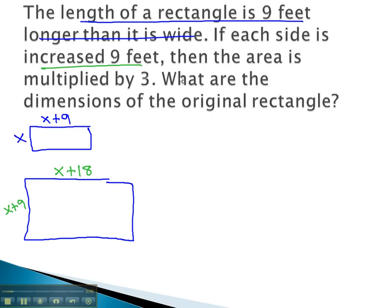When we do this, the area is multiplied by 3. We recall that we multiply the small rectangle by 3 in order to get the larger rectangle. So let's look at the area of that smaller rectangle, x times x plus 9.